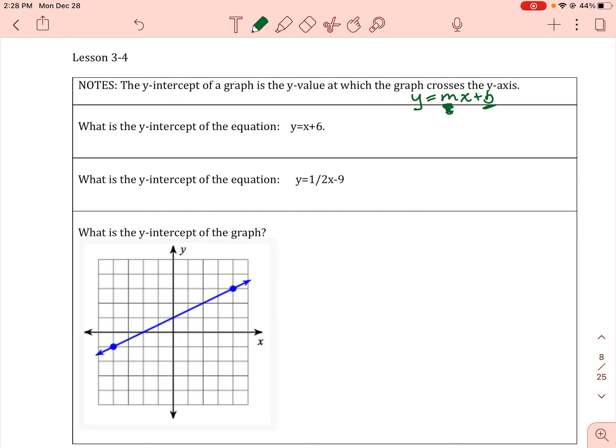So here the y-intercept or b equals - we want to look for the number without a variable - b equals 6. Here I have m equal to 1, but we're more concerned about our y-intercept here, so b equals 6.